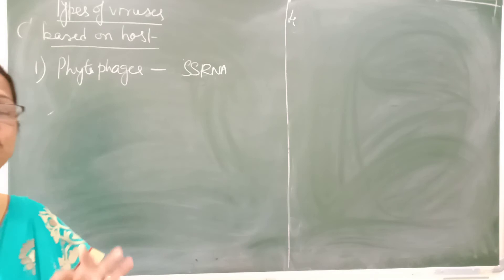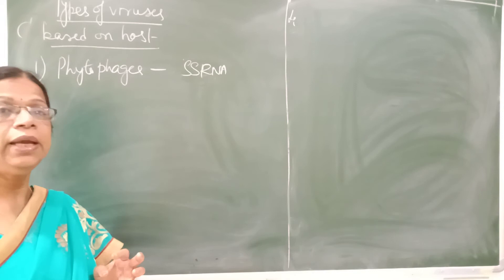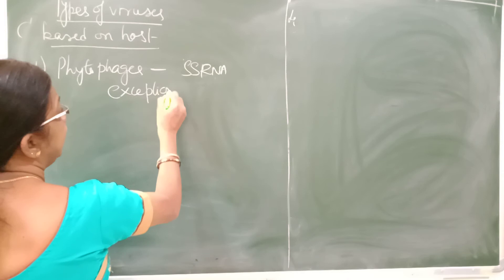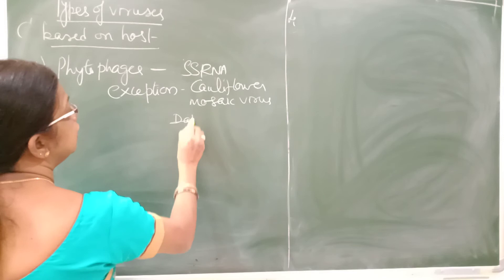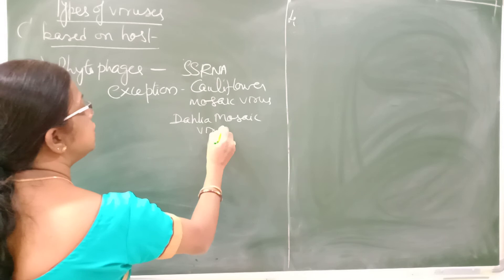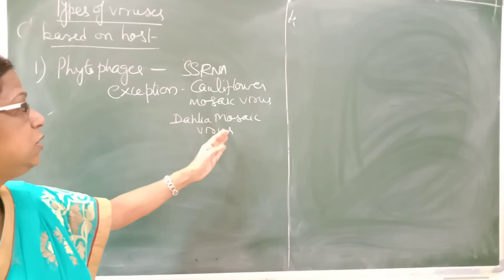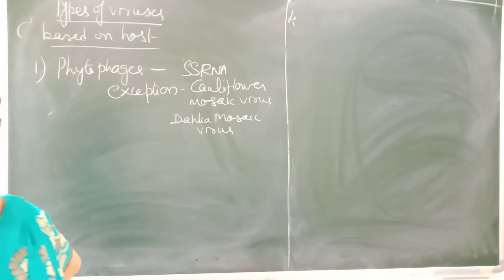Rarely, double-stranded DNA can also be found in phytophages. An exception is the cauliflower mosaic virus, which has double-stranded DNA as its genetic material.